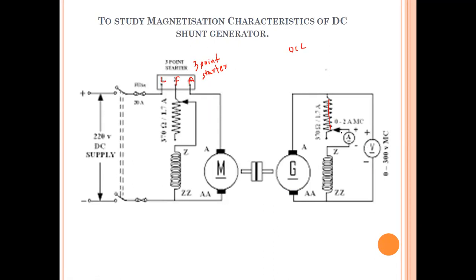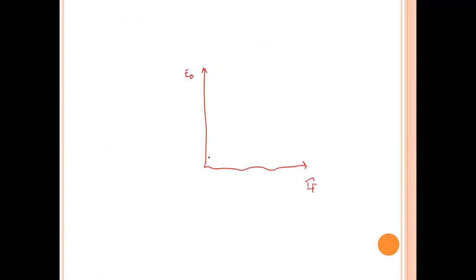Regarding voltage buildup in a generator: initially, there is residual flux present in the field winding. When the armature of the generator rotates, it cuts that residual flux and an EMF is induced. So when the field current is zero, there is still a small value of EMF induced, which is called the residual EMF.